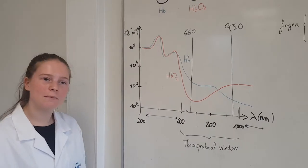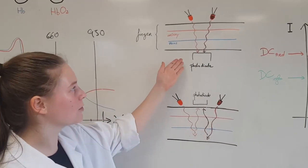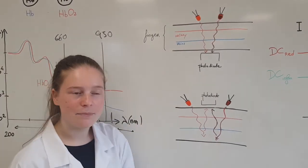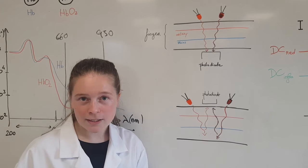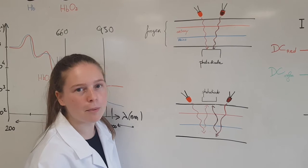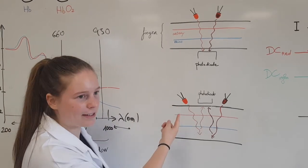Most oximeters use the light transmitted through the finger, meaning the photodiode collecting the light is put on the opposite side of the finger from the LED. But a small part of the light is also retro-diffused in the finger, so with our reflective oximeter we can collect light with the photodiode on the same side as the LED.